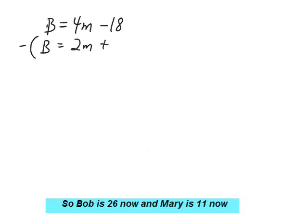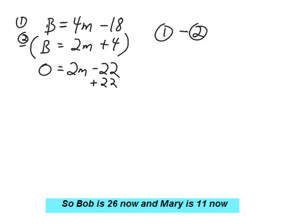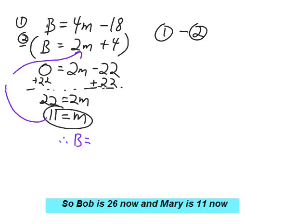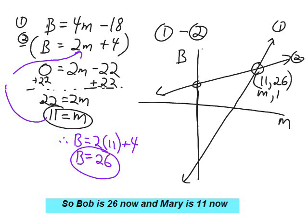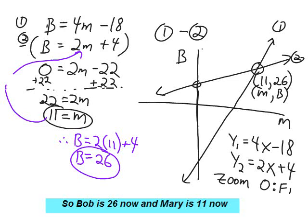We could have used substitution or graphing as well — it would have been the same equations. Don't forget when graphing, if you can't see the solution, adjust your window. Zoom zero fit will often give a pretty good window to get you in the ballpark.